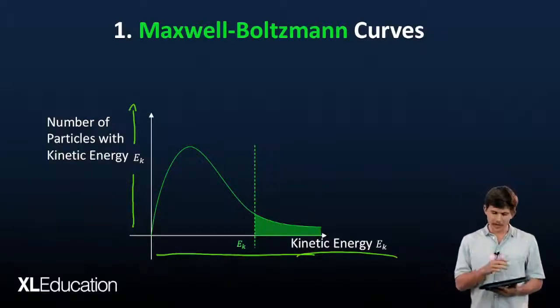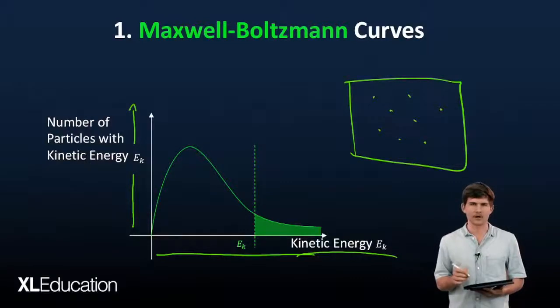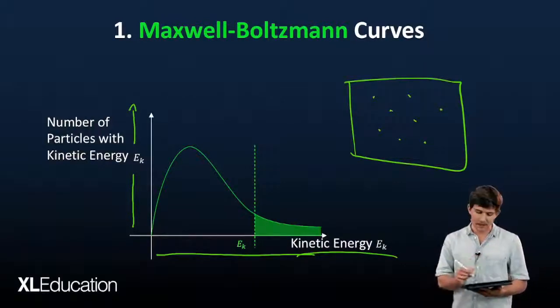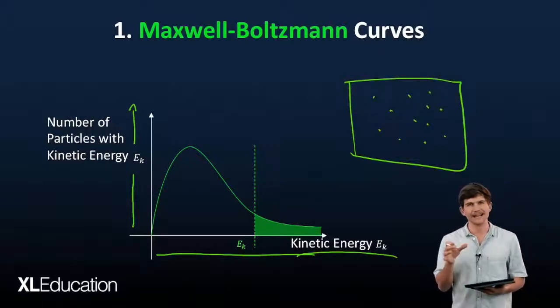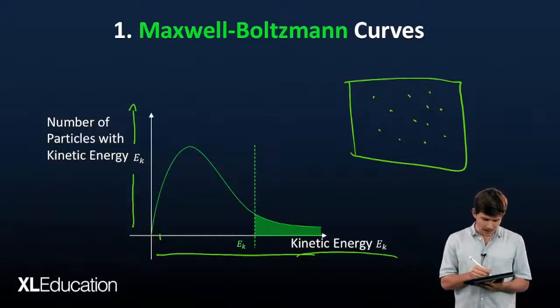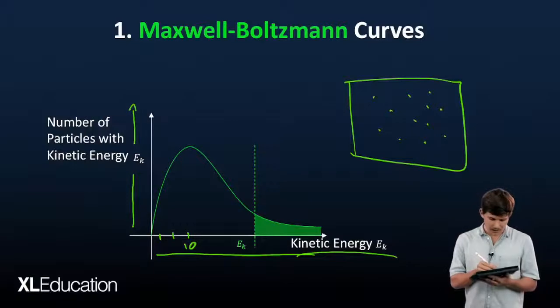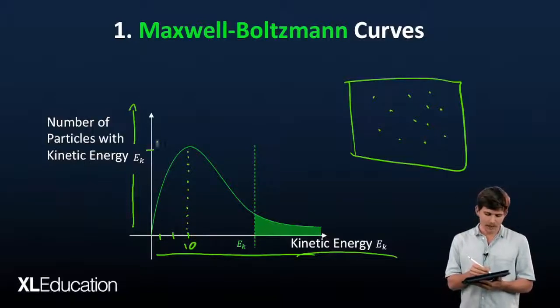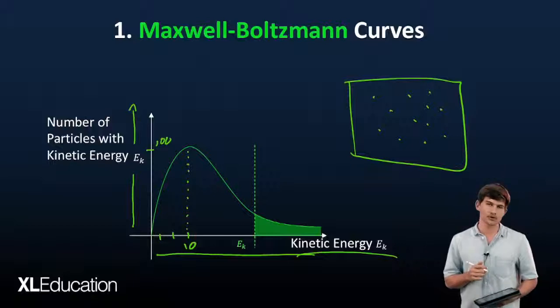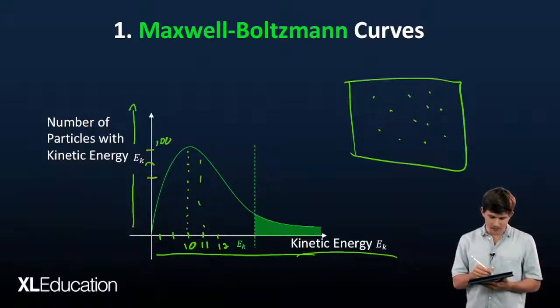Every particle in your flask has an associated amount of energy, EK. What we've done with the Boltzmann Curve is we've plotted and counted how many particles have each amount of energy. In this example, 100 particles have 10 units of energy. Each energy level has an associated number of particles with that relative energy.